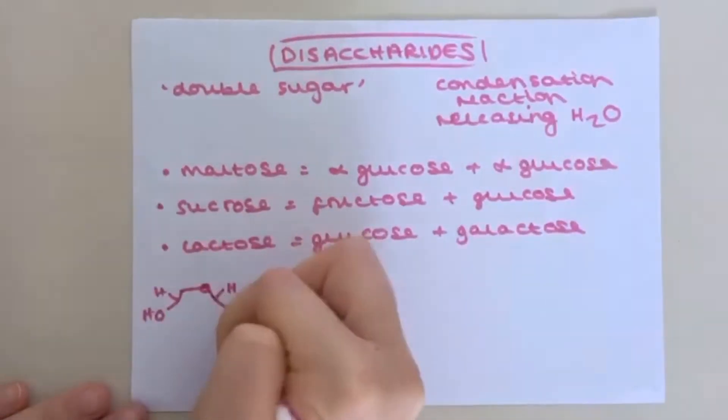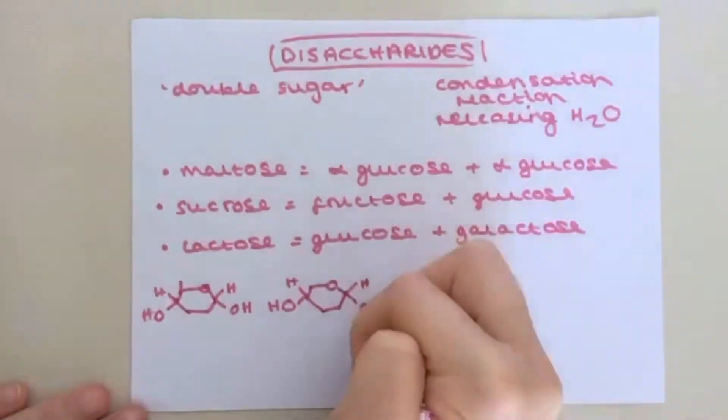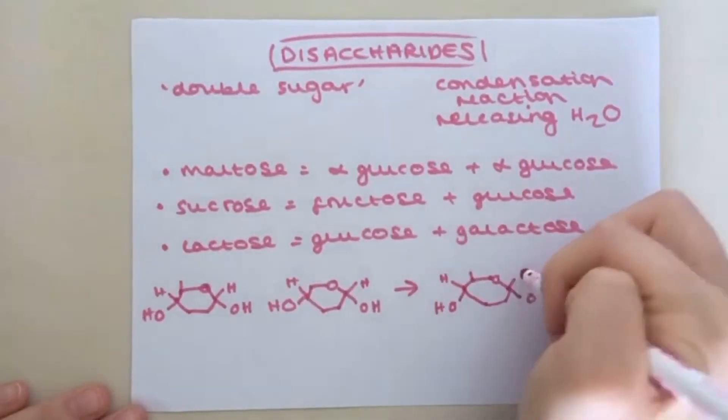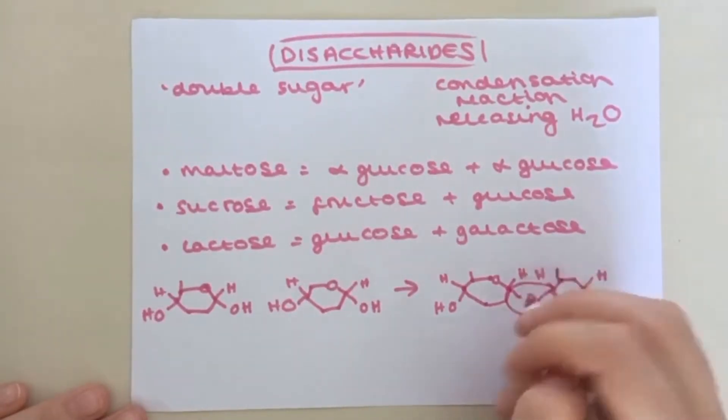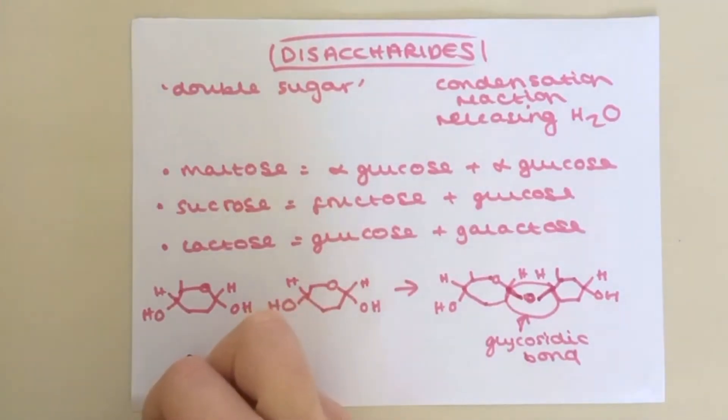I'm now going to draw the condensation reaction between two alpha-glucose molecules. This bond here is called a glycosidic bond. Due to losing that molecule of water, maltose and the two other disaccharides have the chemical formula C12H22O11.